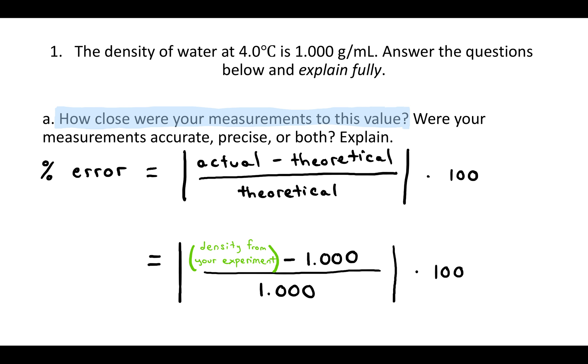So the actual is what you got from your experiment. The theoretical here is one. And you would want to give that answer as: my density measurement was blank percent away from 1.000 grams per milliliter.